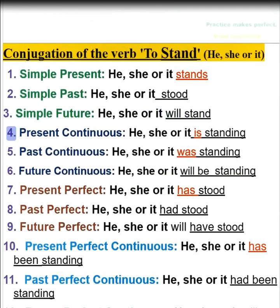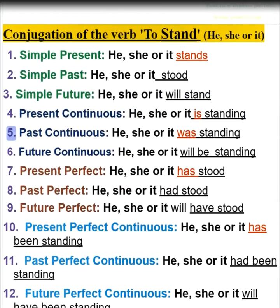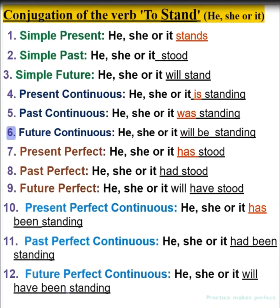4. Present continuous — he, she, or it is standing. 5. Past continuous — he, she, or it was standing. 6. Future continuous — he, she, or it will be standing.